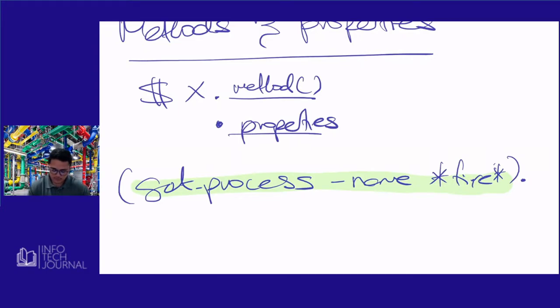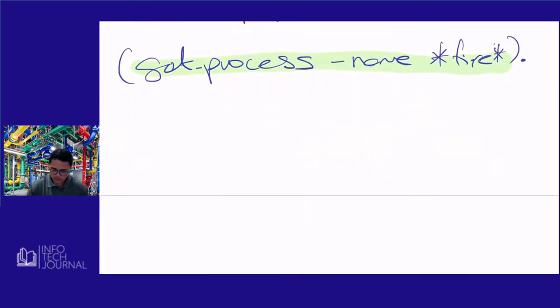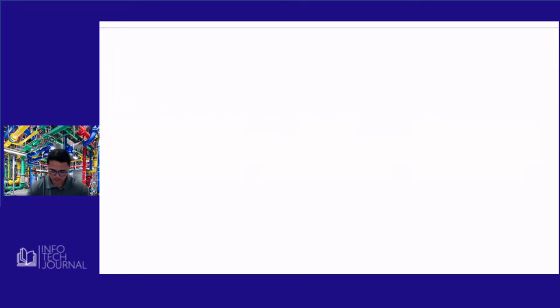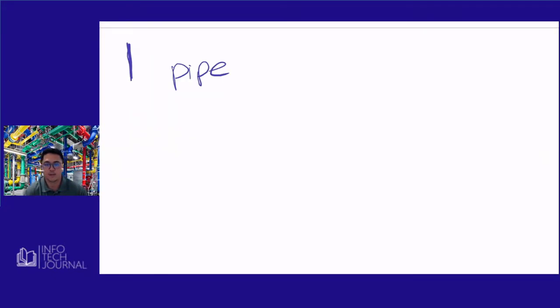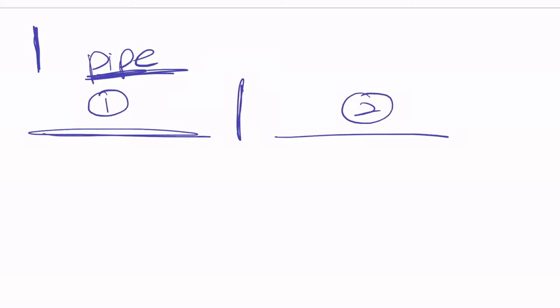Now we know how to access methods and properties. In this video, we're going to explain this symbol — a vertical line — which is the pipe. We will look deeper into what a pipe does. Basically, if you have a pipe in the middle, you have one part of your command and a second part. Whatever value or information on the first section gets passed to the second section, which can be a commandlet, a variable assignment, formatting a table, or sorting.